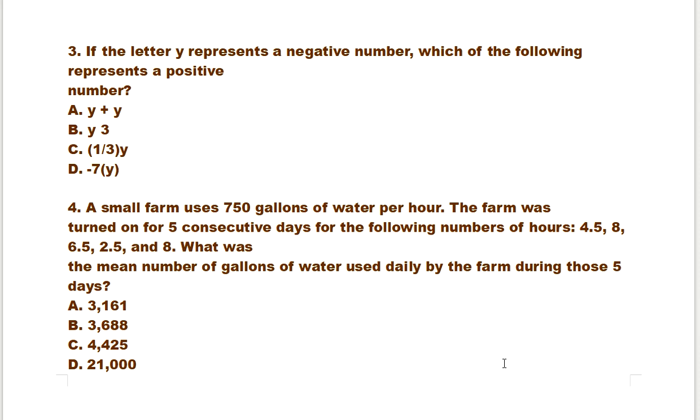What was the mean number of gallons of water used daily by the farm during those five days? A. 3,161, B. 3,688, C. 4,425, D. 21,000.